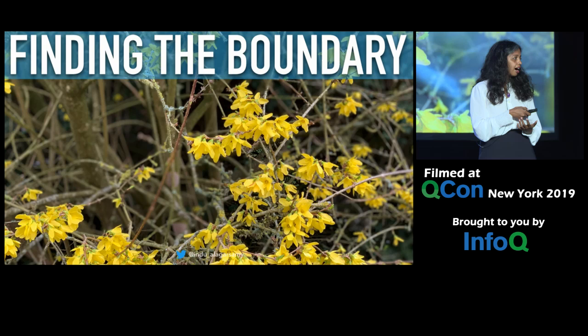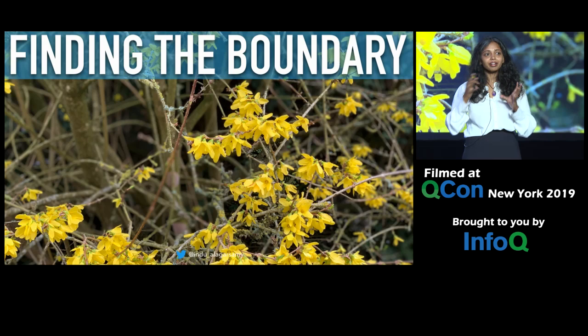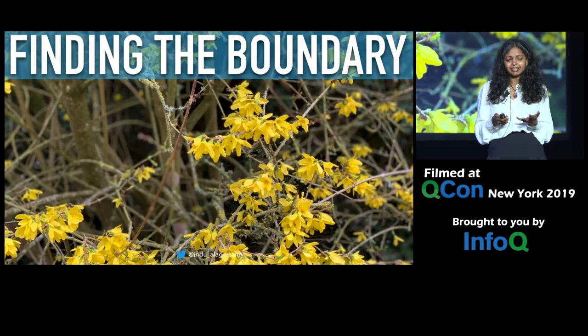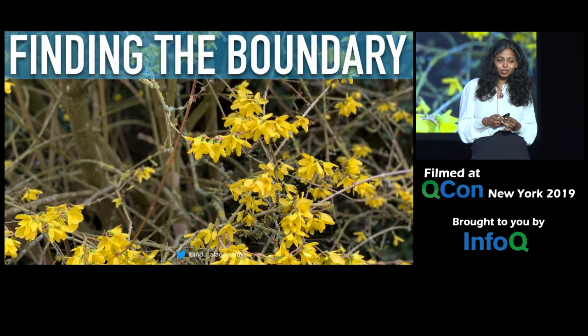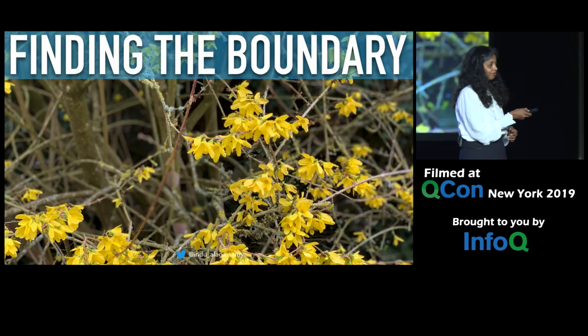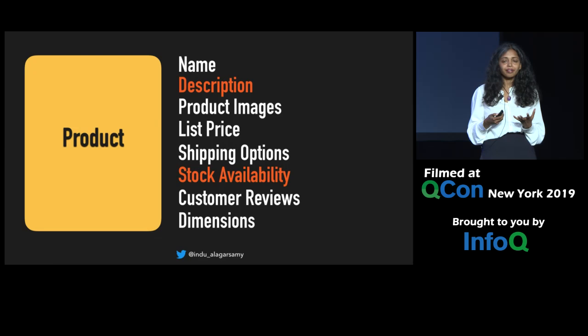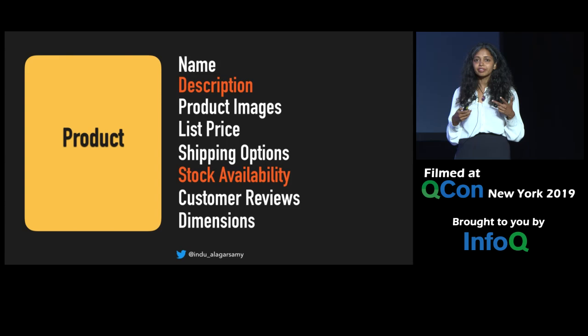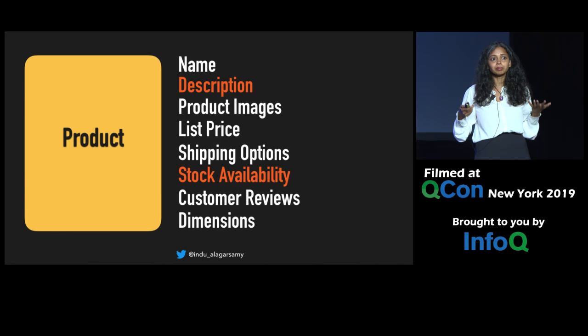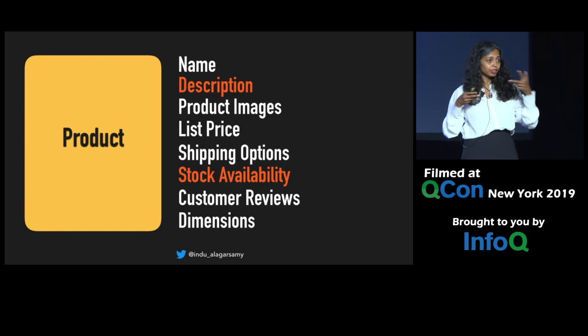The question is: how do you find these bounded contexts? One heuristic I use is asking: do I need transactional consistency when updating a couple of fields together? For example, would I ever need to update the product description and the availability in the same transaction? Probably never. That's a clear indication those two things don't belong in the same context.